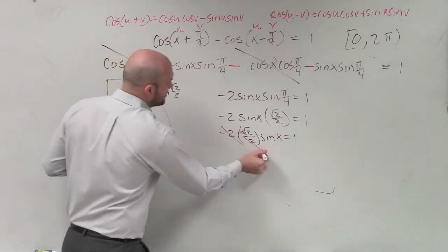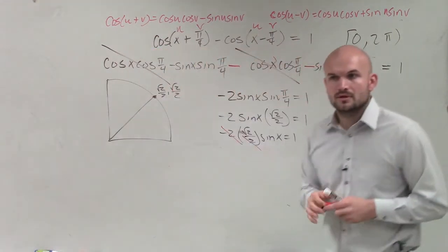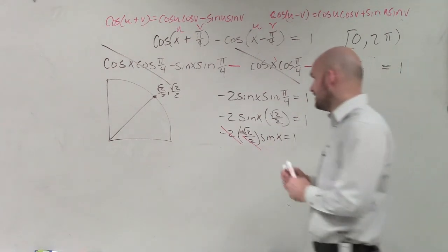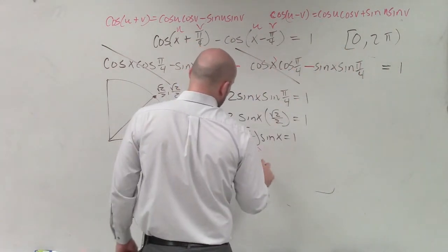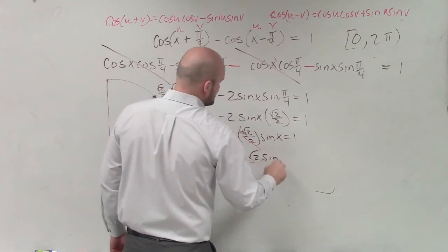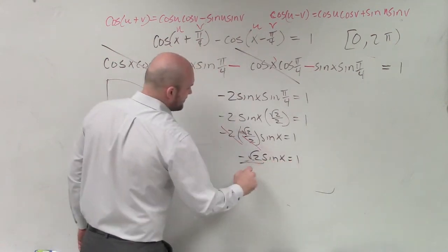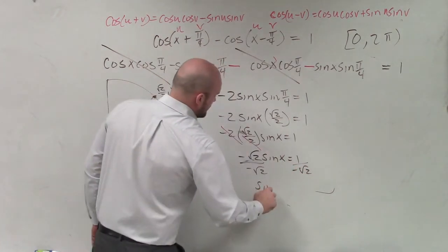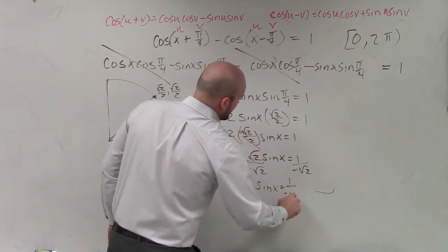So now I can see why those divide out, right? They divide to 1. So now I'm finally left with a negative square root of 2, square root of 2 times the sine of x equals 1, divide by negative square root of 2, divide by negative square root of 2. Sine of x equals 1 over negative square root of 2.